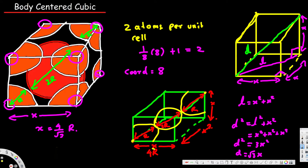We derived that d equals the square root of three times x, and d equals four r. Therefore four r equals the square root of three times x. Solving for x, we get x equals four r over the square root of three. That is the edge length formula.